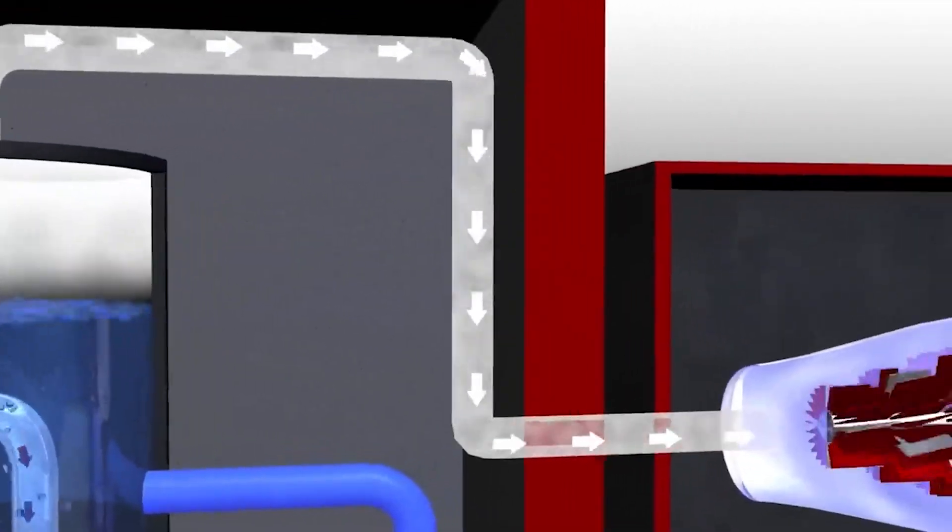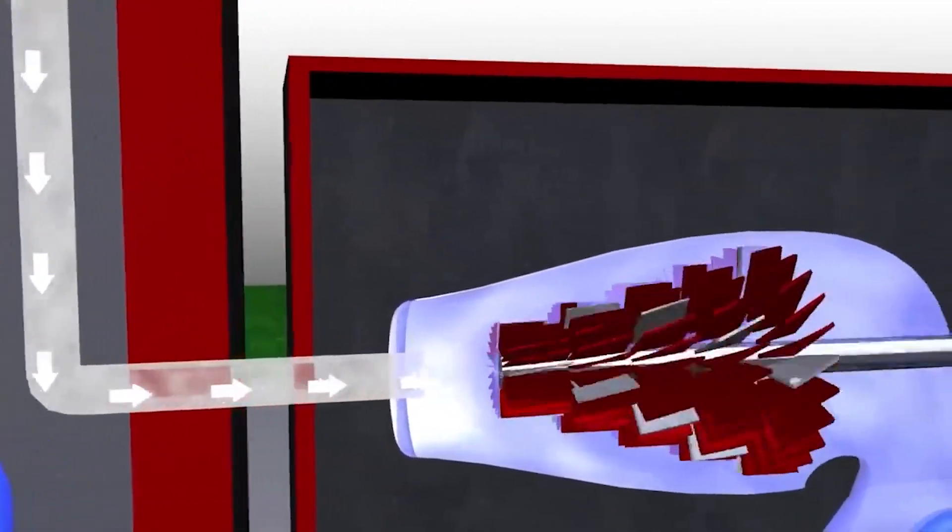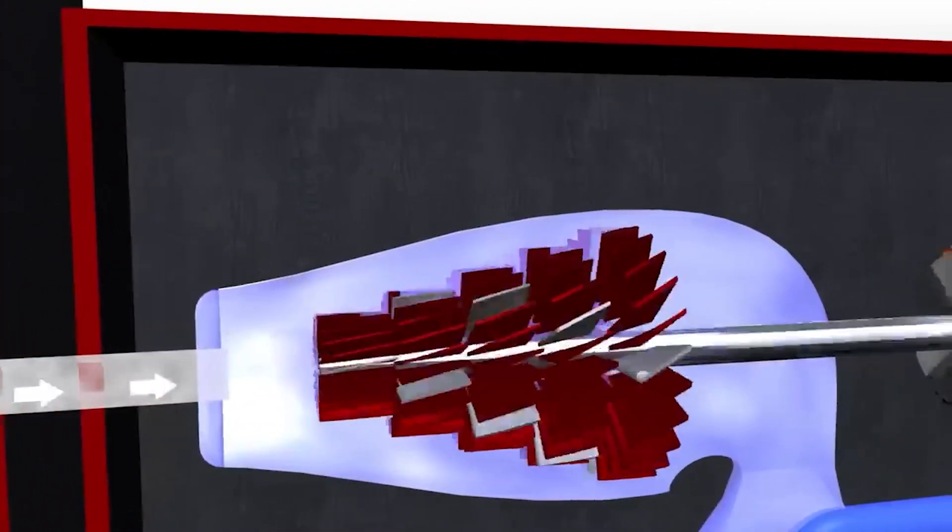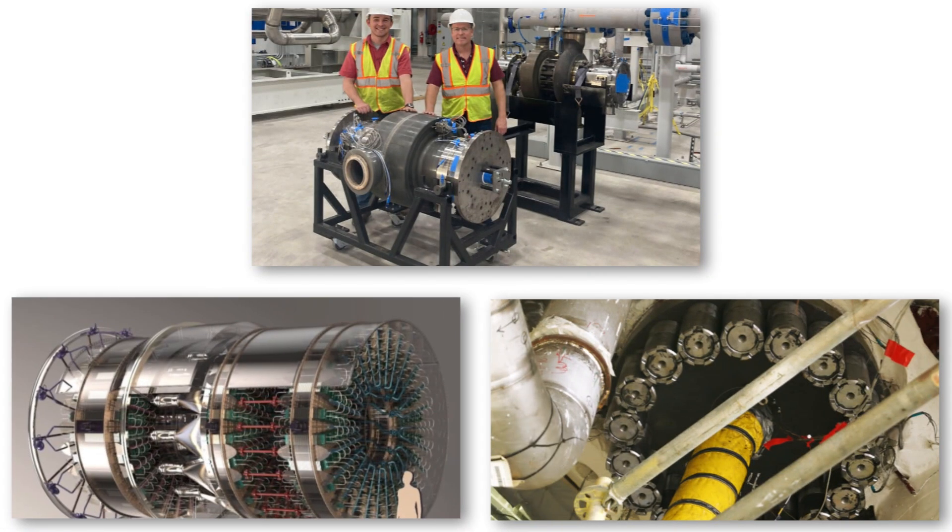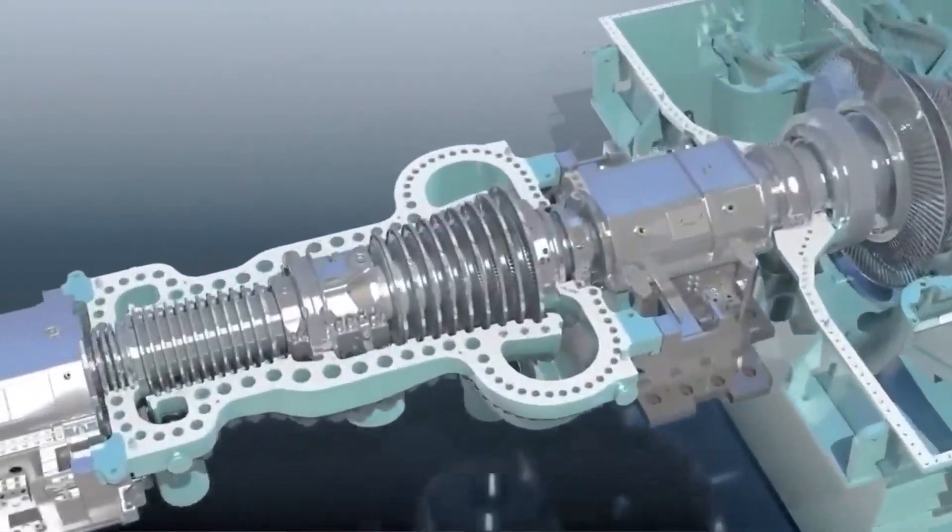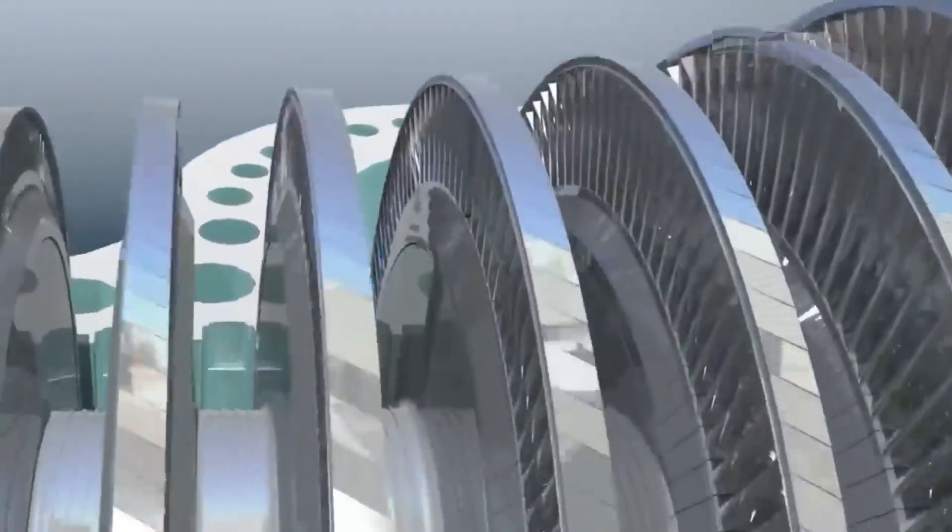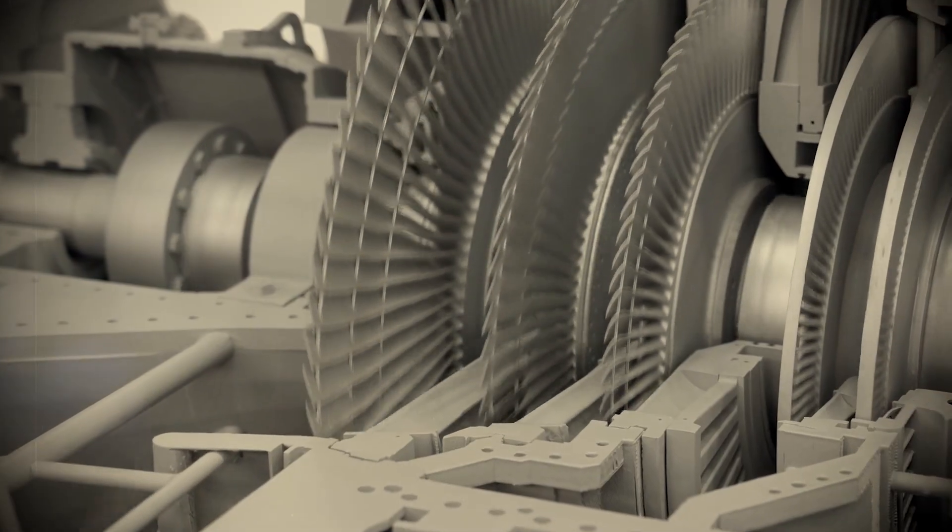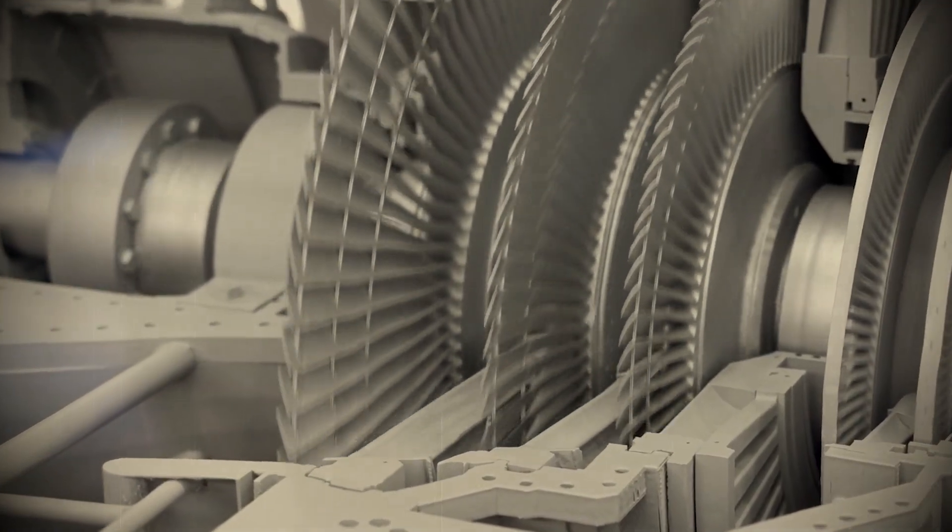Even with all these emerging systems, the combined cycle gas turbine remains the global standard for efficiency and reliability. It's the workhorse of modern power grids: fast to start, flexible in operation, and highly efficient. While renewables like wind and solar continue to expand, their intermittency means that gas turbines are still essential for balancing the grid and maintaining stable electricity supplies.